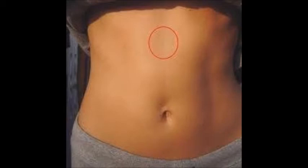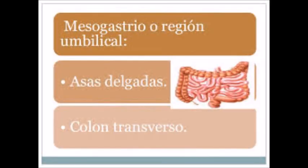Pain in this region is associated with intestinal and colon problems. The upper left quadrant contains the left portion of the liver, part of the stomach, the pancreas, the left kidney, the splenic portion of the transverse colon, the descending colon, and part of the small intestine.